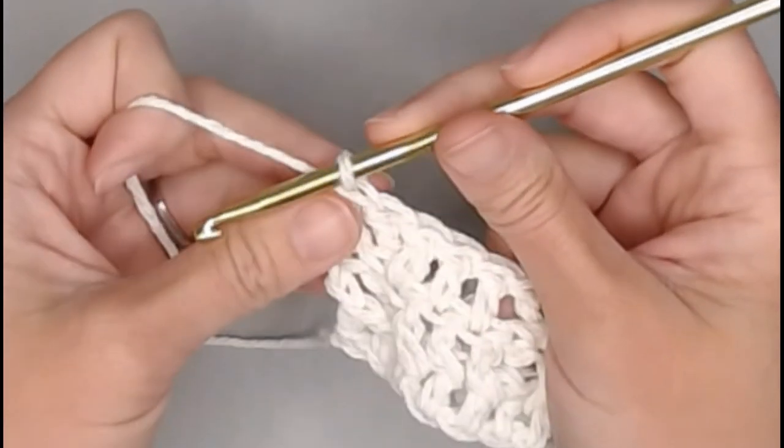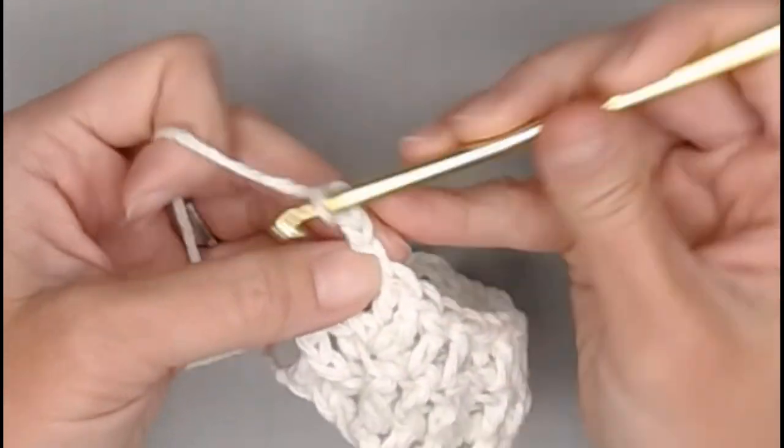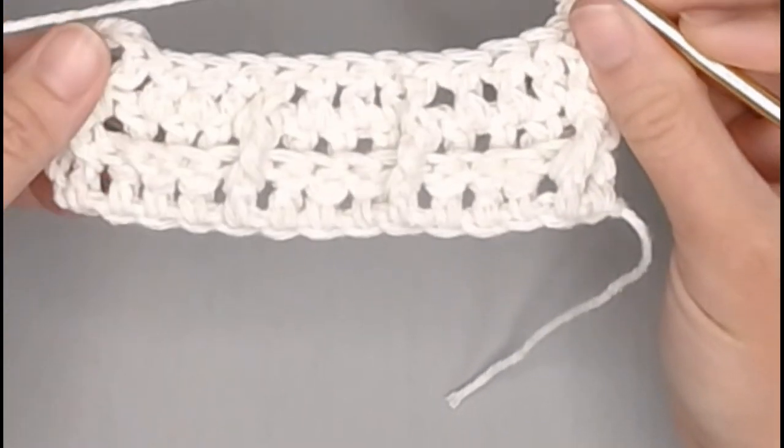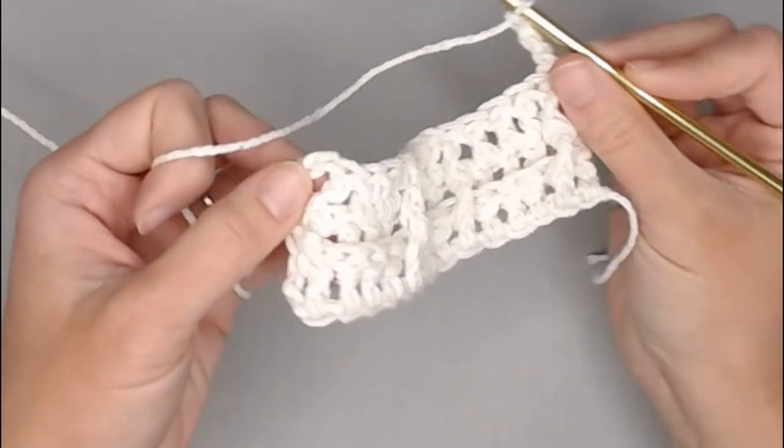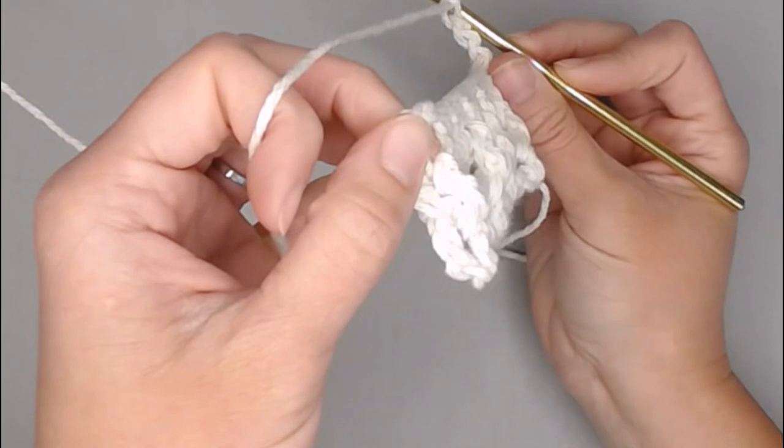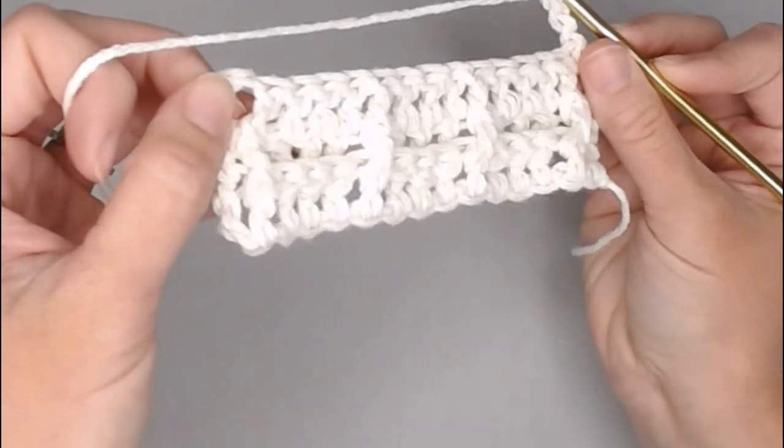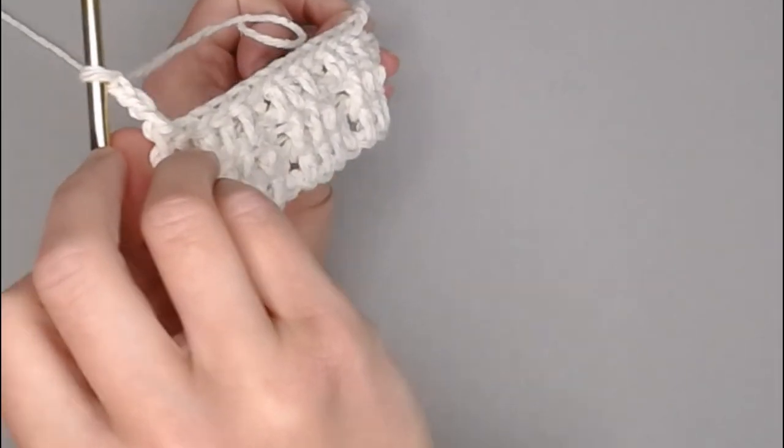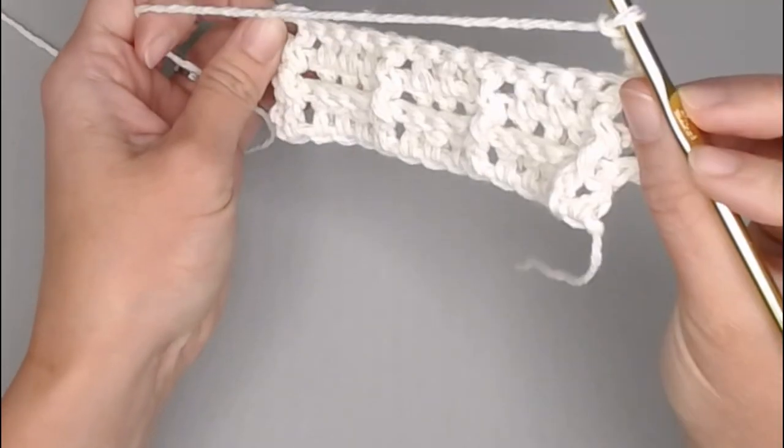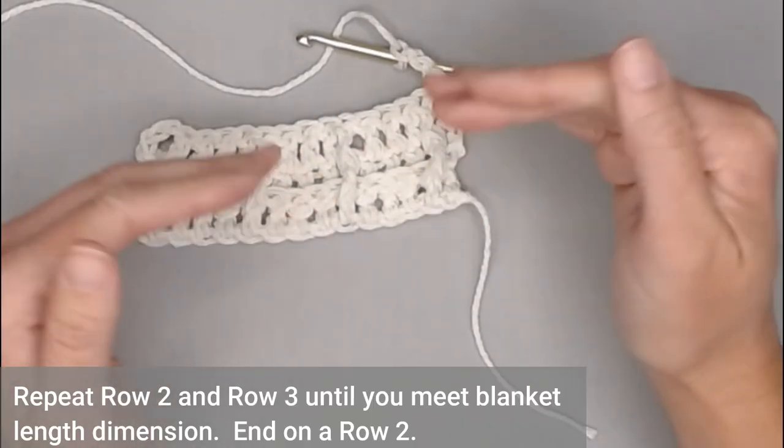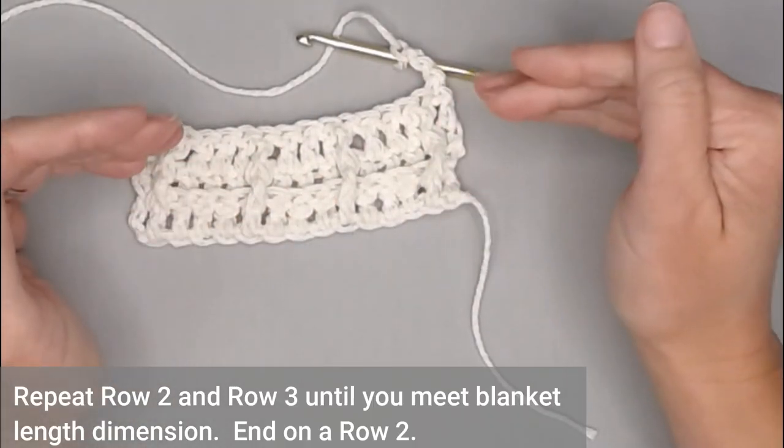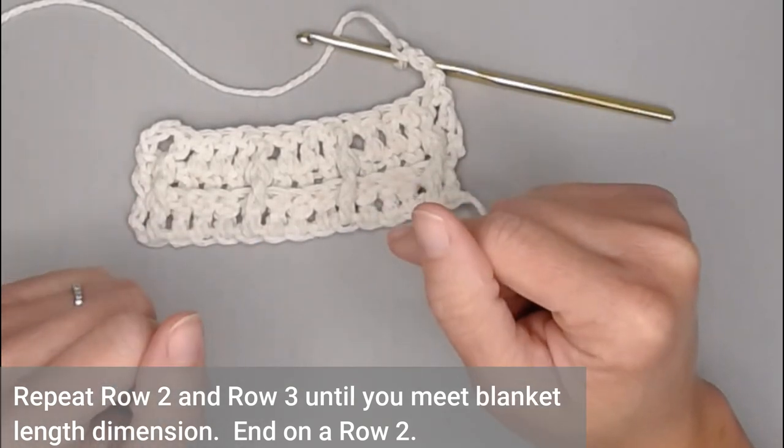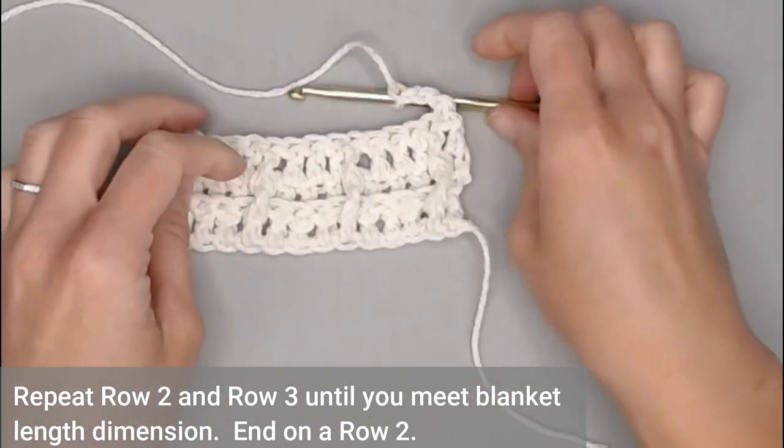Chain three to move on to the next row. One, two, three. Turn our work. And with this side, you will see those posts stick out. Again, you want all the posts to stick out one side and the other side, everything is flat. So you repeat row two, row three, row two, row three, row two, row three, ending your very last row on a row two. Super important.